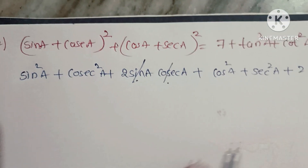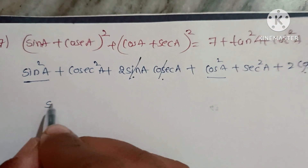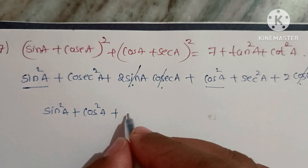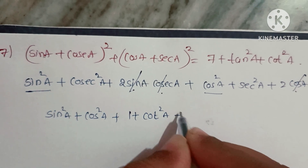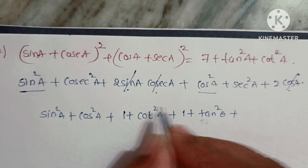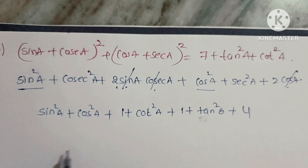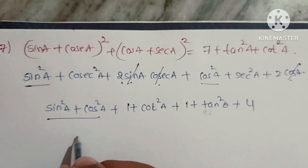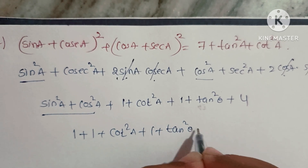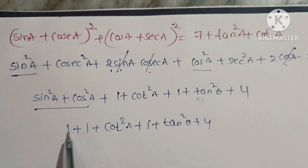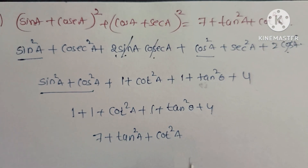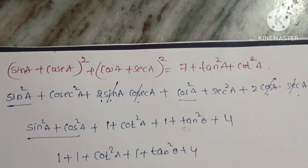So we have sin²A + cos²A + cosec²A + sec²A + 4 = 1 + (1 + cot²A) + (1 + tan²A) + 4 = 1 + 1 + cot²A + 1 + tan²A + 4 = 7 + tan²A + cot²A. Hence proved.